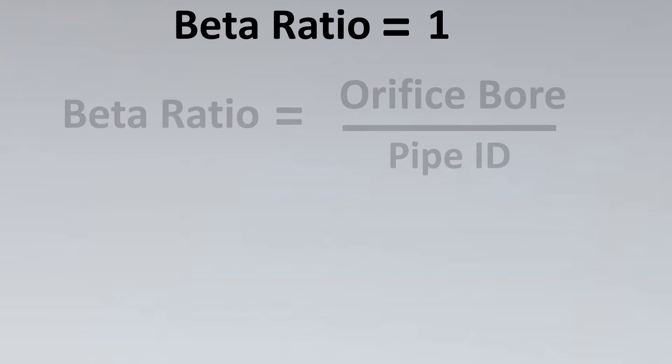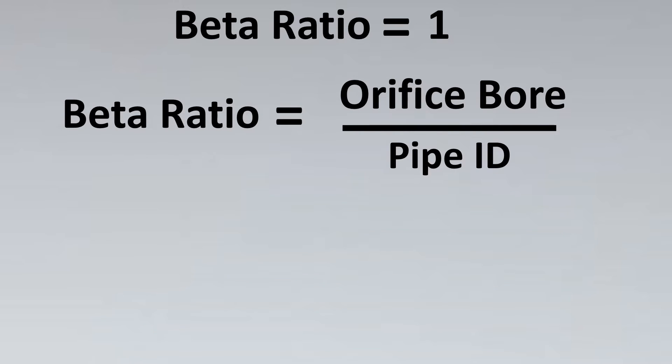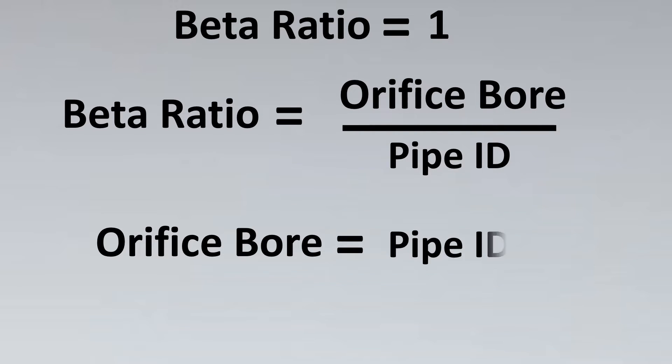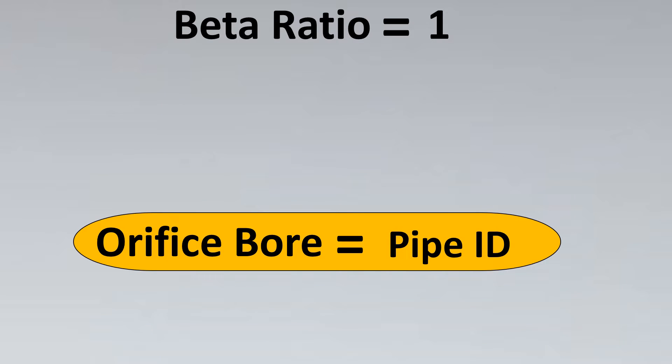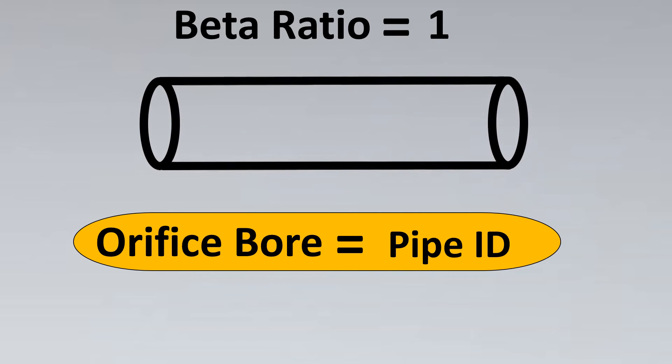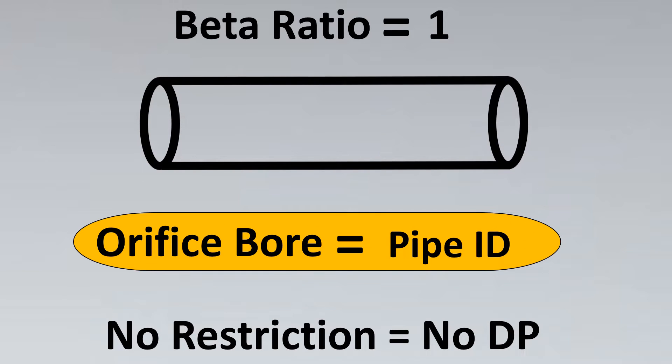Now let's get to the interesting part. Let's try to explore and find out what if we don't follow this. What happens? Let's keep beta ratio as 1. If we keep beta ratio as 1, as per the formula, the orifice bore has to be equal to pipe ID. Then they would cancel each other, the answer would be 1. So if we keep this the same, what is going to happen is you would have absolutely no restriction to the flow. So there would be no DP. So we can surely not keep a beta ratio of 1. That's absolutely out of context.